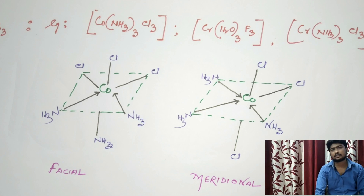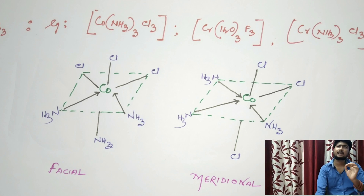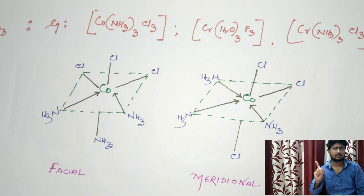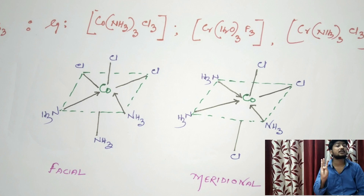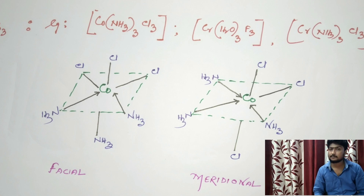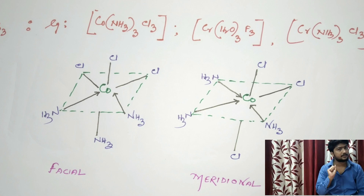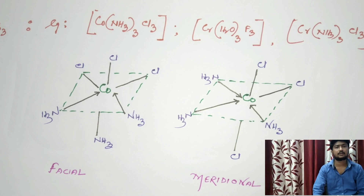To summarize: for compound MA4B2, you get one cis and one trans isomer — two geometrical isomers — and an optical isomer for the cis isomer, giving three isomers total. For MA3B3, you get two isomers: one facial and one meridional.